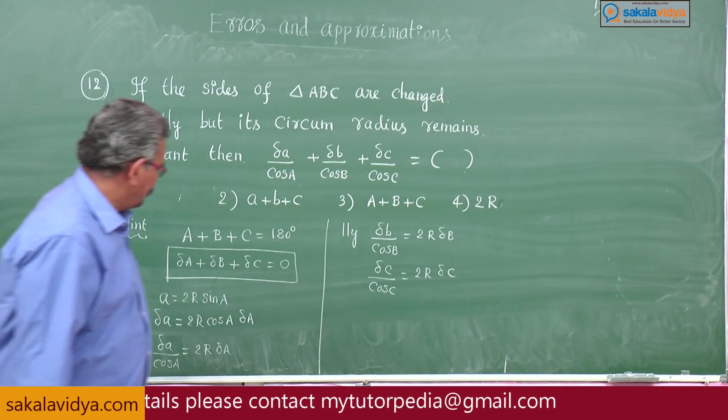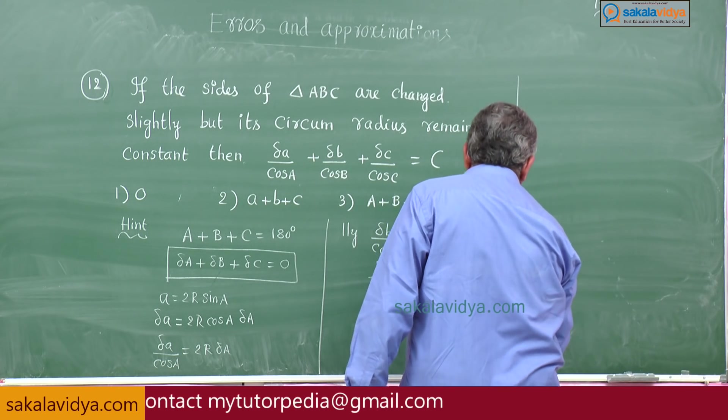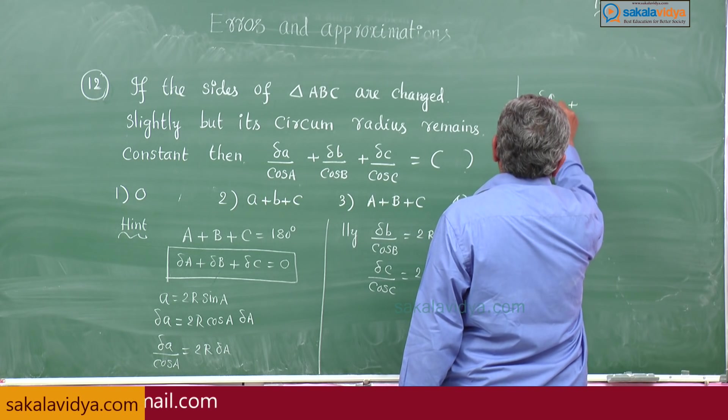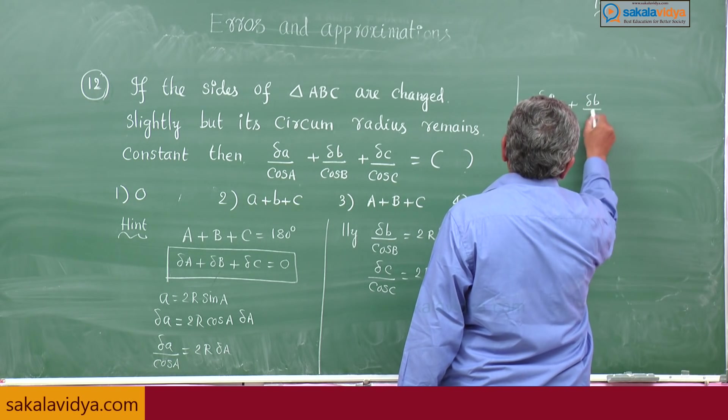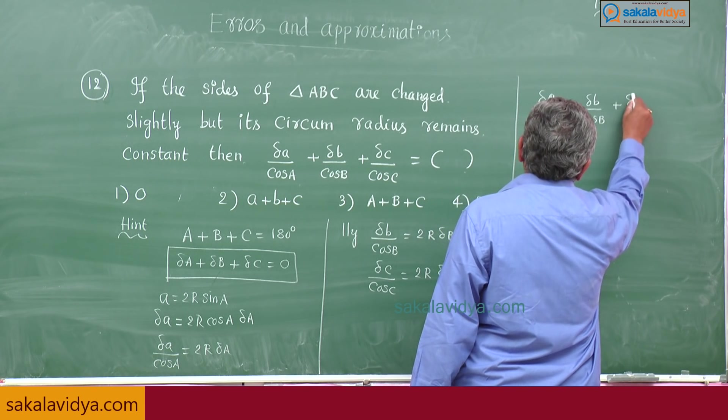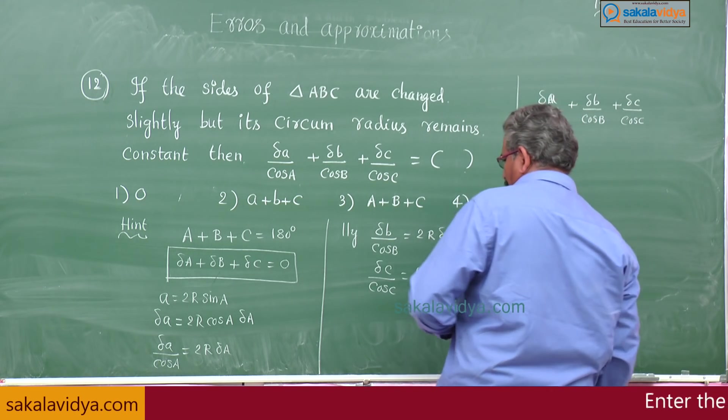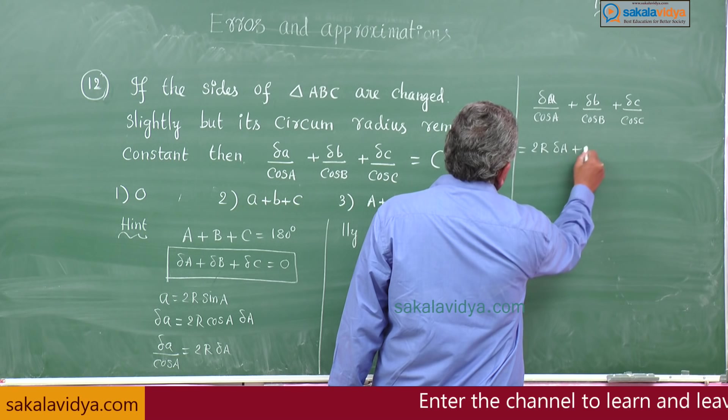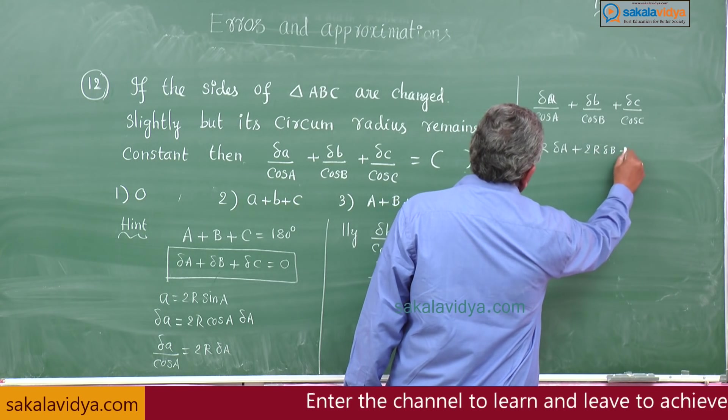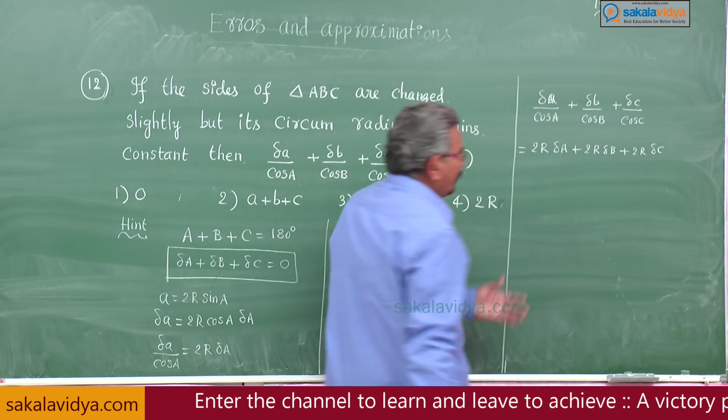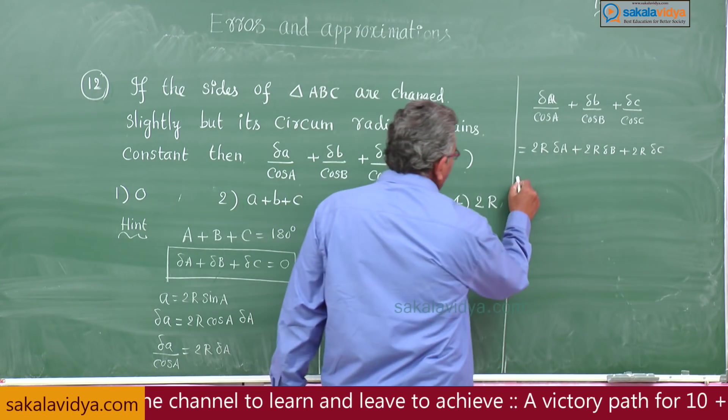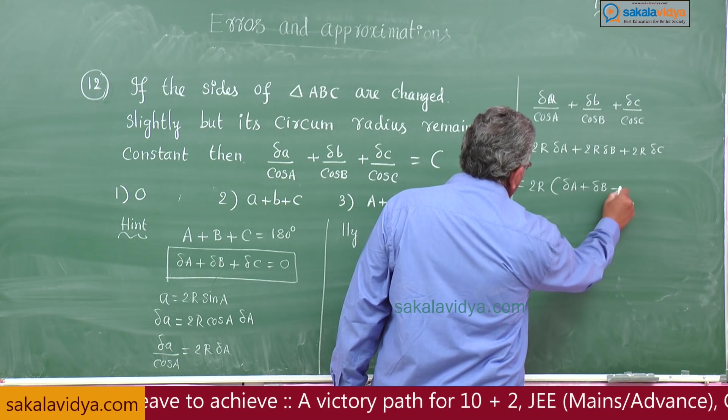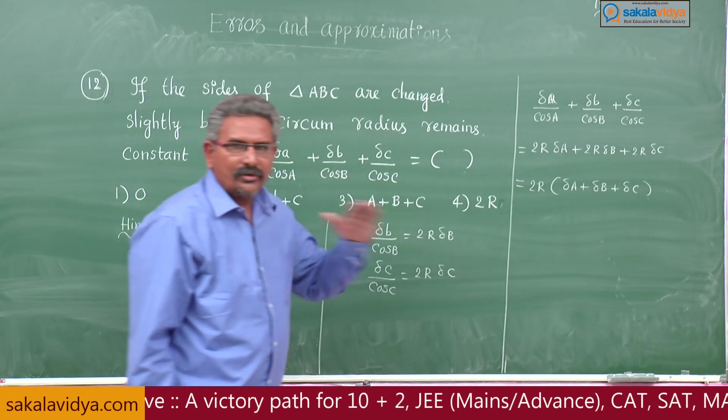Let us substitute. Now delta A by cos A plus delta B by cos B plus delta C by cos C, this is equal to 2R delta A plus 2R delta B plus 2R delta C. Take 2R common: if you take 2R common, delta A plus delta B plus delta C, just see what do you observe?